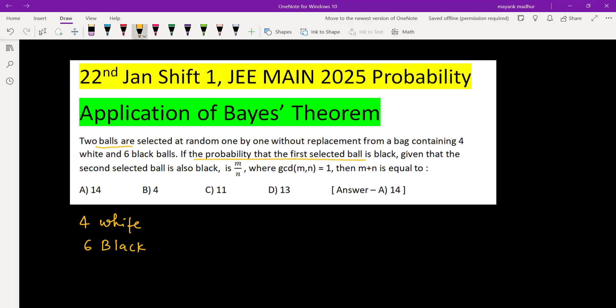If the probability that the first selected ball is black given that the second selected ball is also black is M by N where GCD of M,N is one, then M plus N is what? Here is an event which has already been done, that is second selected ball is black.